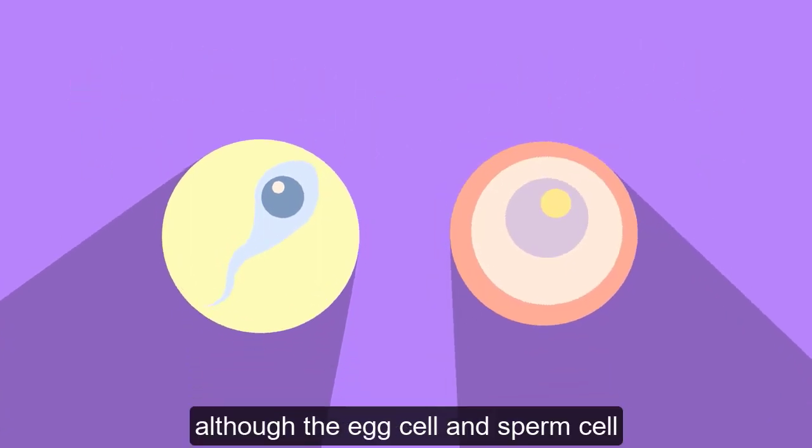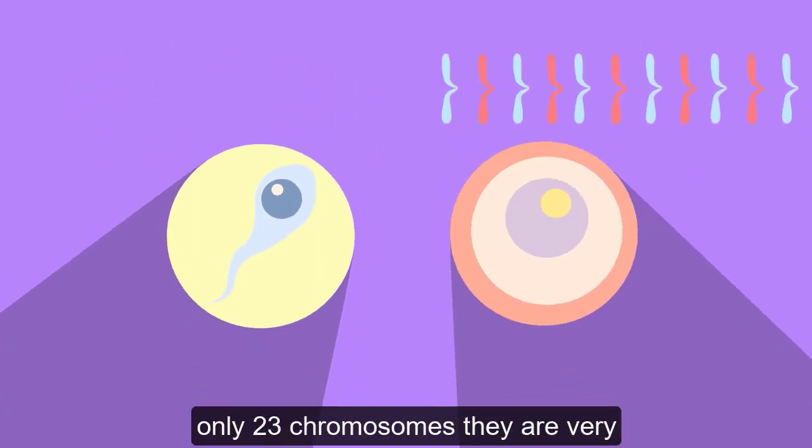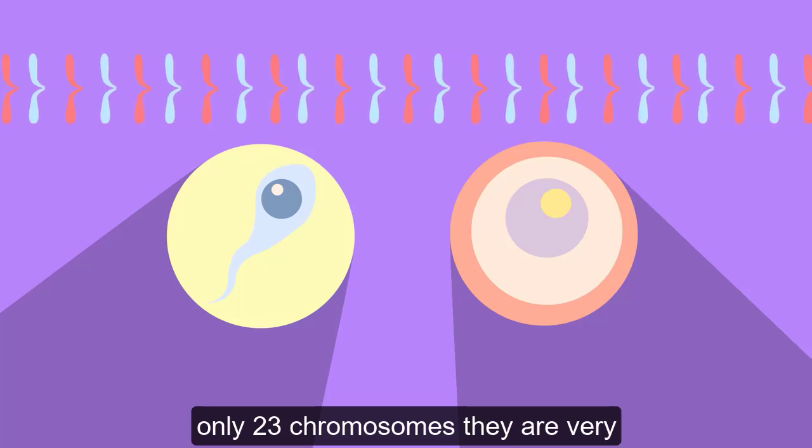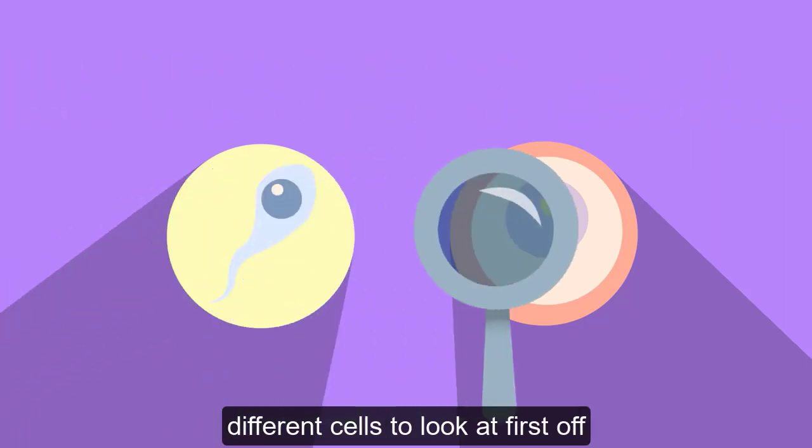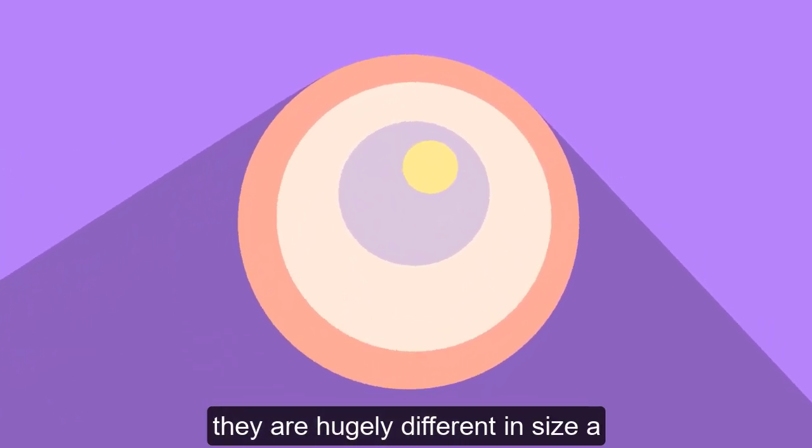Although the egg cell and sperm cell have this very important similarity of only 23 chromosomes, they are very different cells to look at. First off, they are hugely different in size.